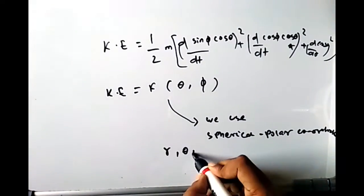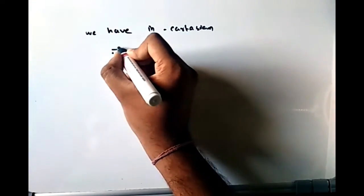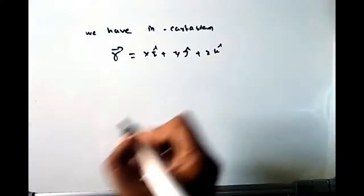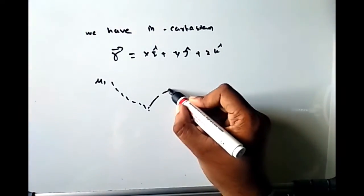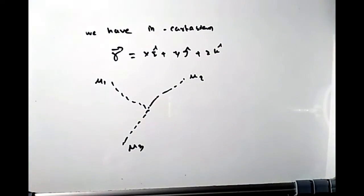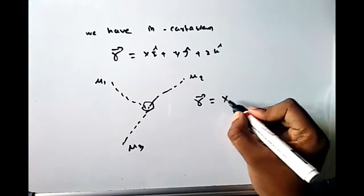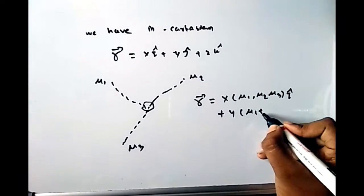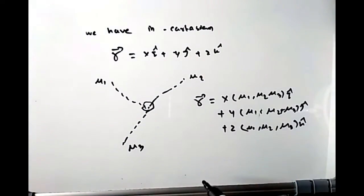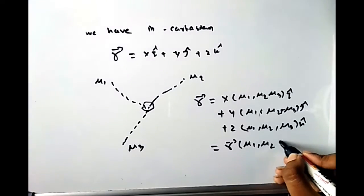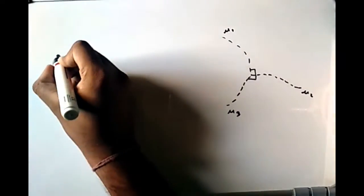Now for the general orthogonal curvilinear coordinate system, we will derive the general case. We know that the position vector r = x î + y ĵ + z k̂. Let's say we have three curves u₁, u₂, u₃ orthogonal to each other, such that r = x(u₁,u₂,u₃) î + y(u₁,u₂,u₃) ĵ + z(u₁,u₂,u₃) k̂, or symbolically r = r(u₁, u₂, u₃).